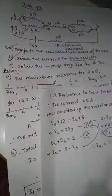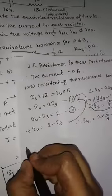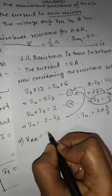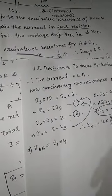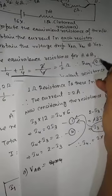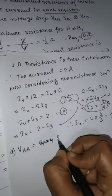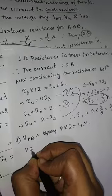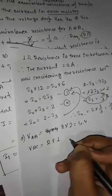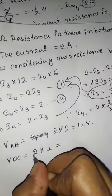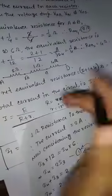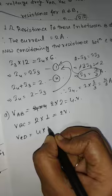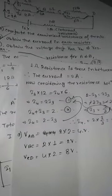Now obtain the voltage drops. VAB: the equivalent resistance between A and B is 2 ohm, and the current is 2 ampere, so VAB = 2 × 2 = 4 volt. VBC: 2 ampere current passes through 1 ohm resistance, so VBC = 2 × 1 = 2 volt. VCD: the equivalent resistance is 4 ohm, so VCD = 4 × 2 = 8 volt. This completes the numerical.